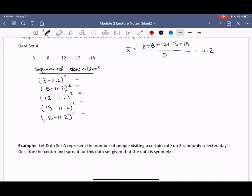Let's check together. For the first squared deviation, we should be getting 67.24. Next one is 10.24. For (12 minus 11.2) squared, we get 0.64. For (15 minus 11.2) squared, we should get 14.44. And our final squared deviation should be 46.24.